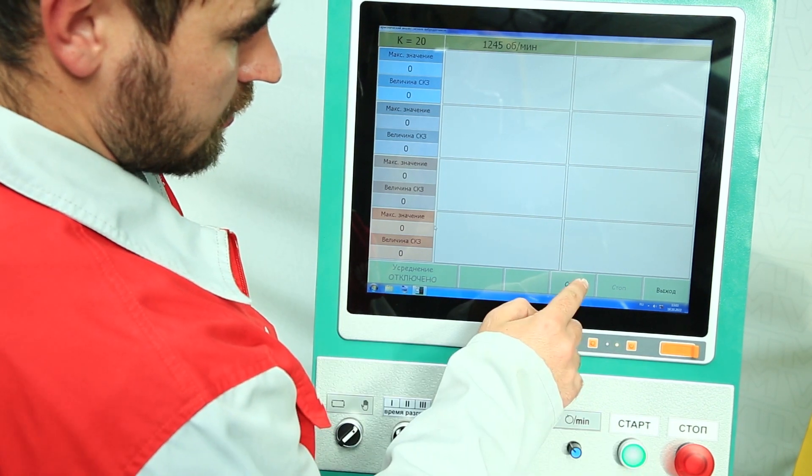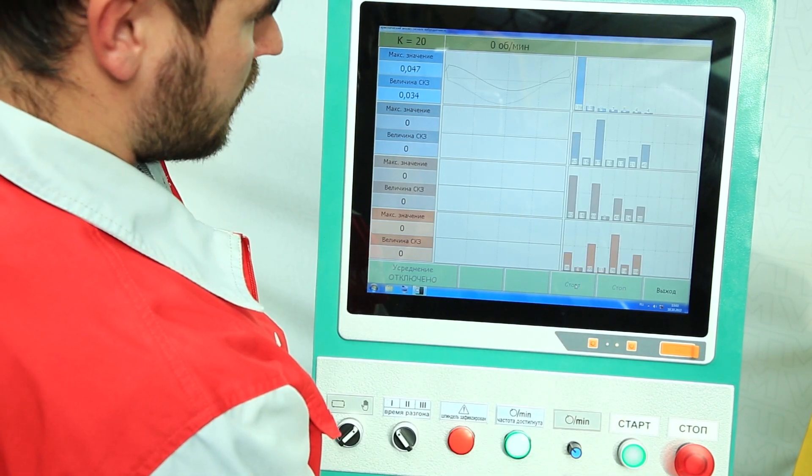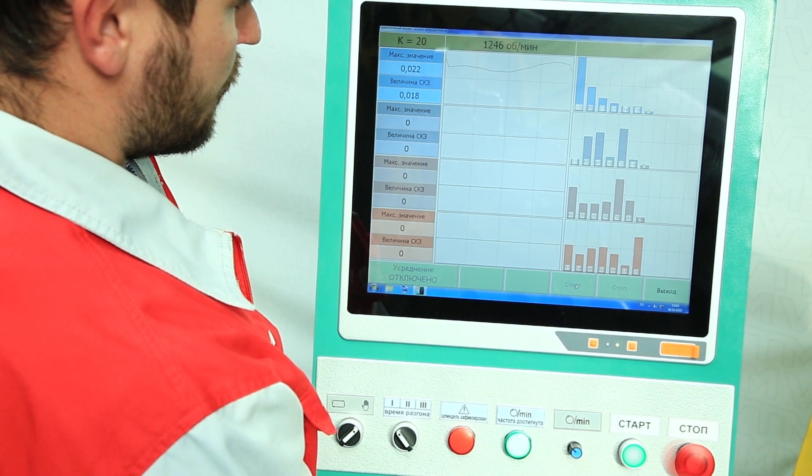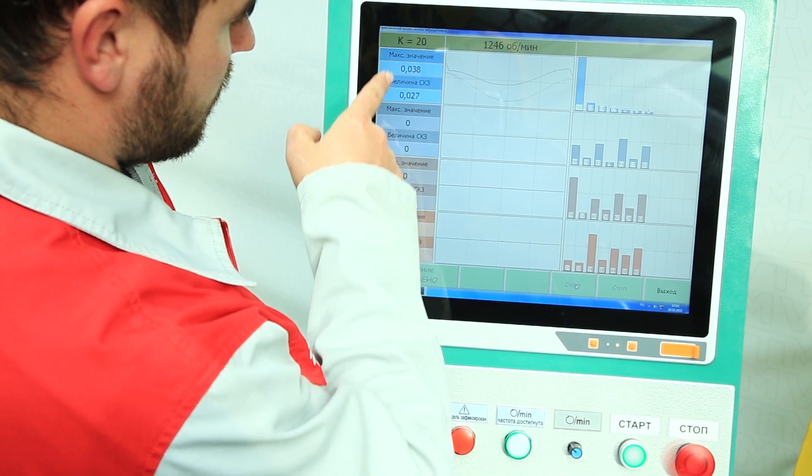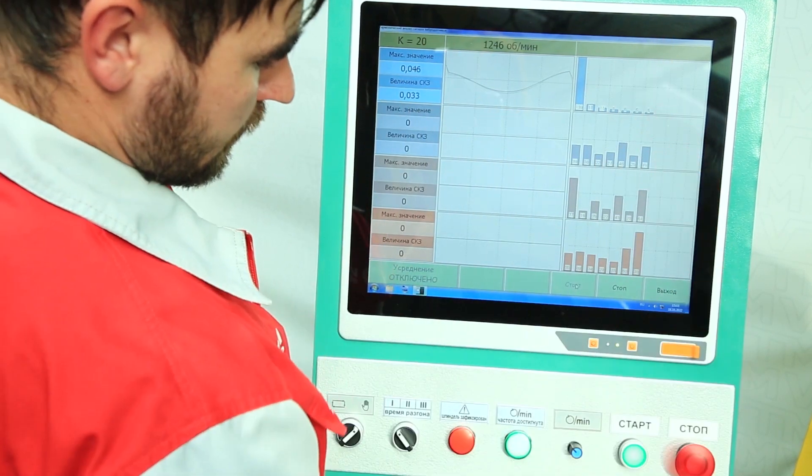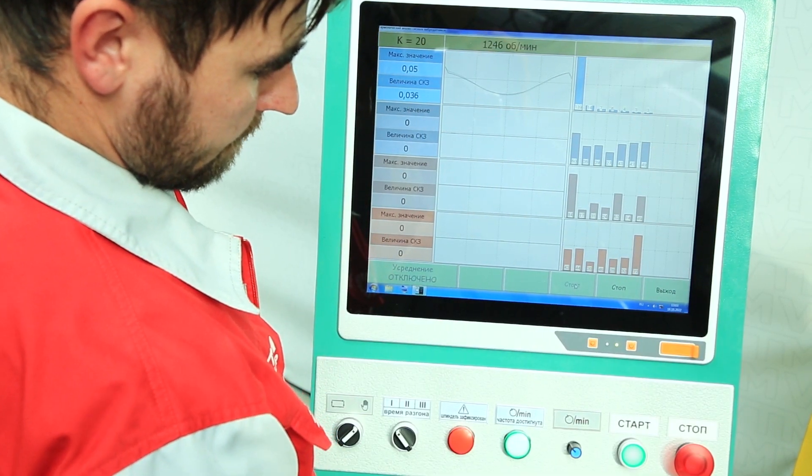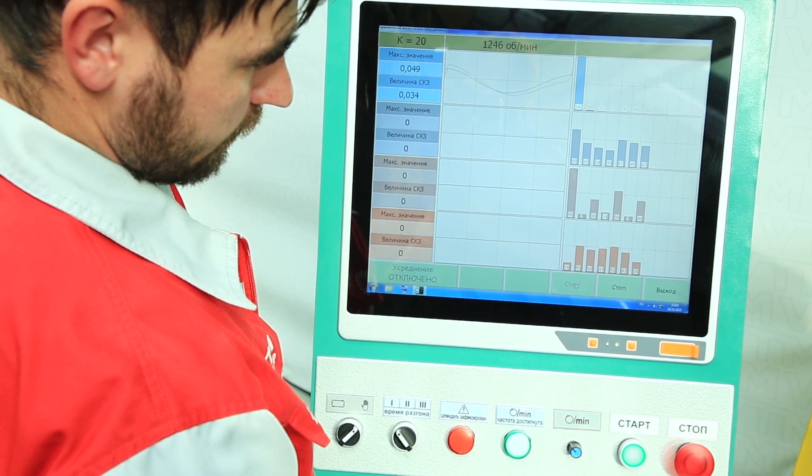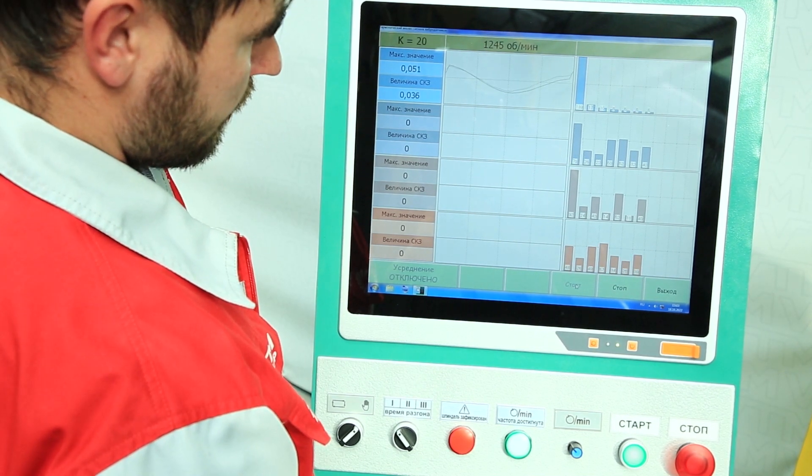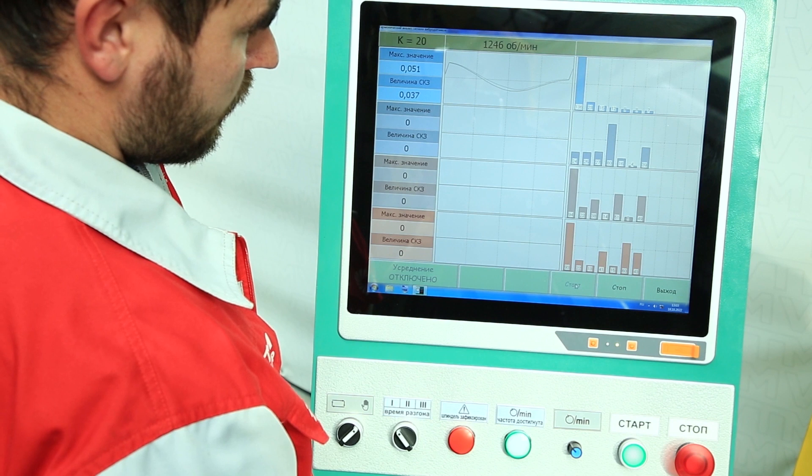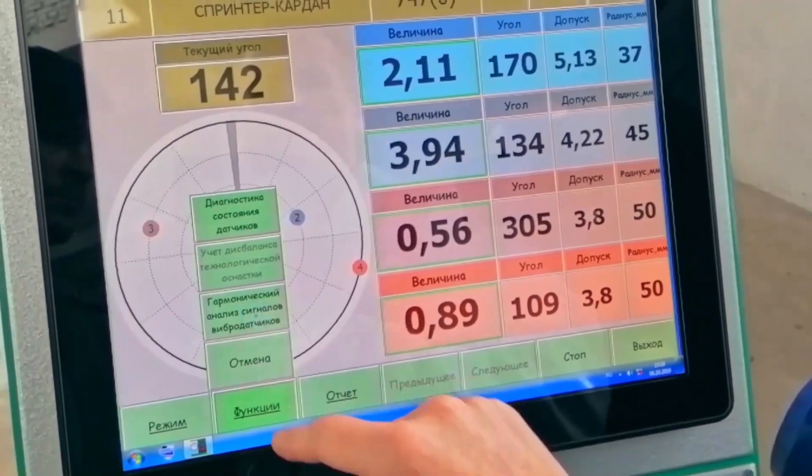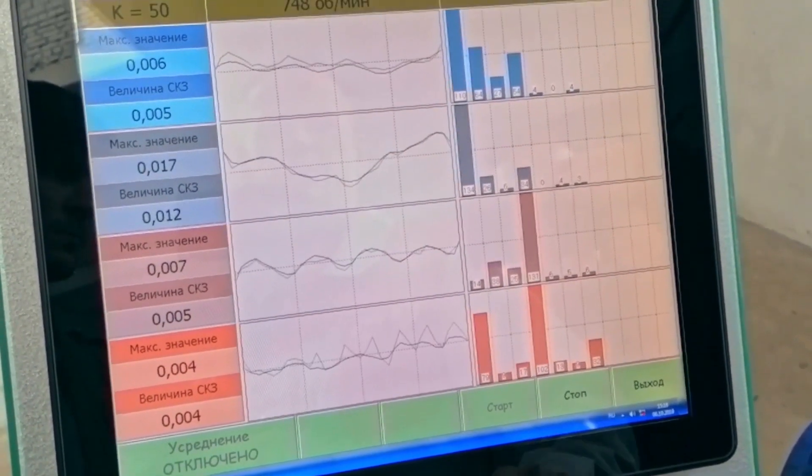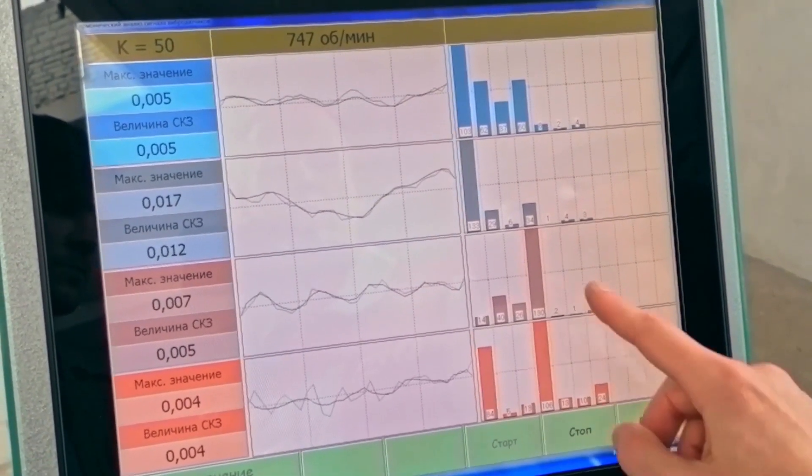To diagnose the quality of the driveshaft, you can use the harmonic analysis function. It is clearly visible here that the first harmonic dominates on all supports. Such a shaft is likely to be easily balanced. However, if you see that some other harmonic, for example, the second, third, fourth, fifth, most likely the shaft has mechanical problems that need to be solved. If this is the second or fourth harmonic support, it is most likely a crosspiece. The third, fifth is an outboard bearing or a spline.